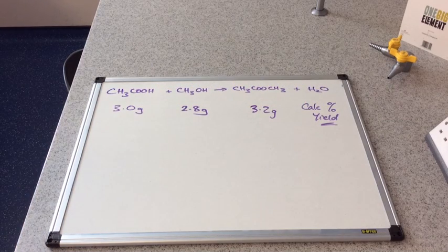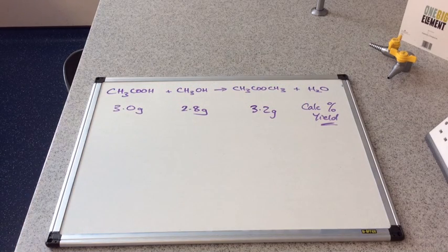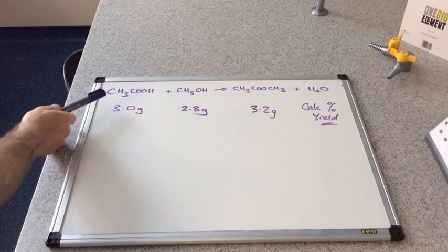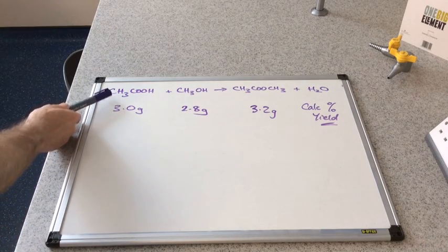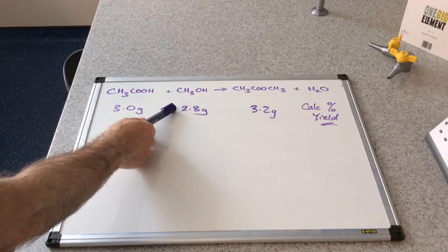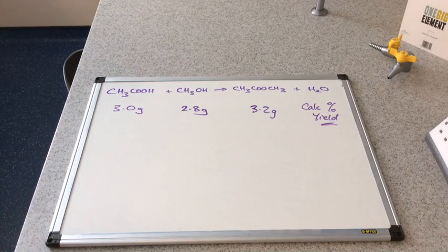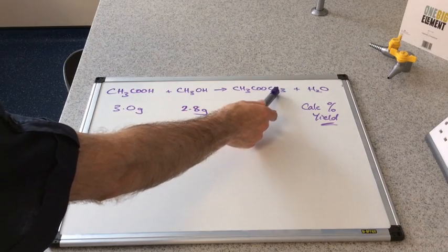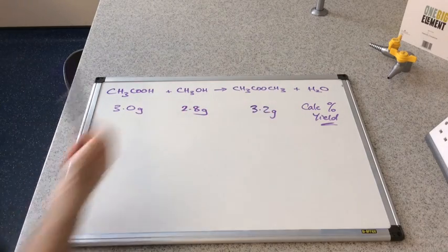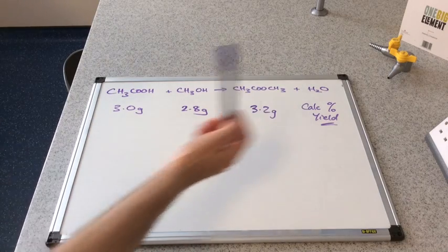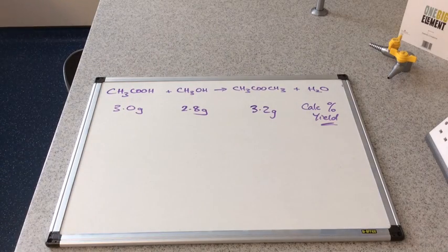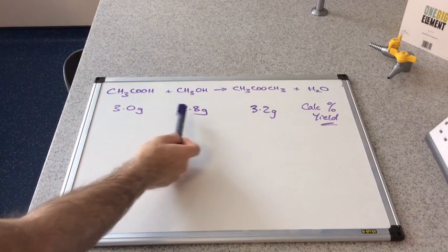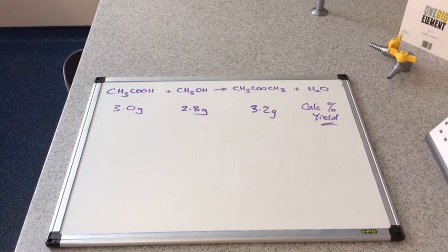We'll use this esterification reaction to be our first worked example. We've got ethanoic acid, 3 grams of that, reacting with 2.8 grams of methanol. That's made 3.2 grams of this ester, methyl ethanoate. We have been asked to calculate the percentage yield for the reaction.